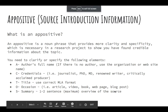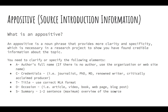We're going to move on to the appositive. This is essentially your source introduction information. Before you cite anything in an MLA formatted document or project, you have to introduce your source. An appositive in a grammatical standpoint is a noun phrase that provides more clarity and specificity, which is necessary in a research project to show that you have found credible information. If you're able to give some information about the author's credentials, the occasion, and a quick summary, then you're building your credibility as a writer and researcher.